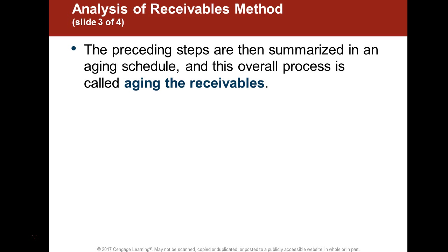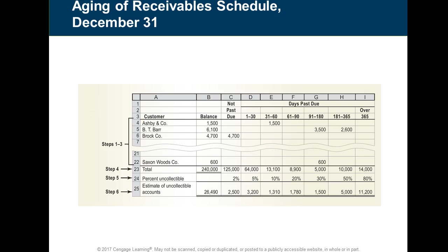This is the aging of receivables, and it is a very sound principle. The longer something is not paid, the better indication you have of whether that organization will pay you back. This gives you an idea of how you are determining what your allowance is going to be based on the age of your items.